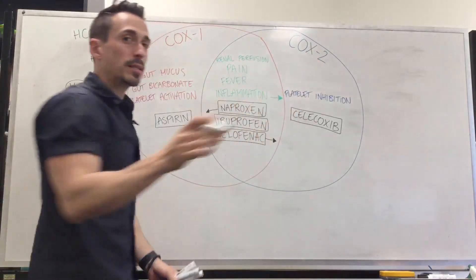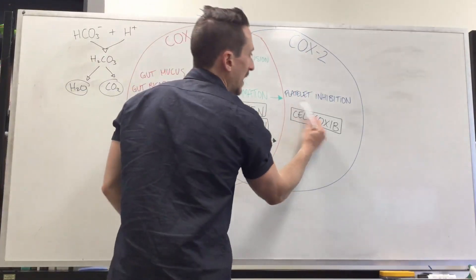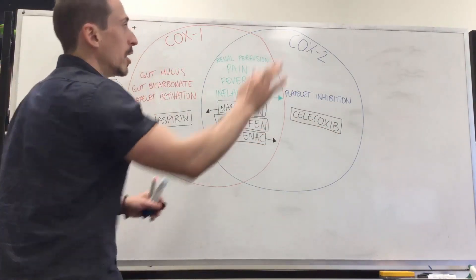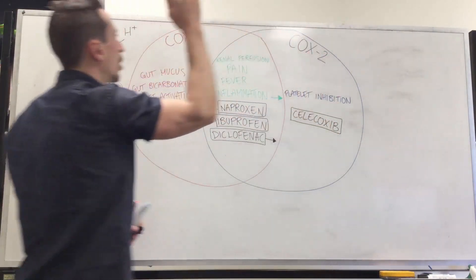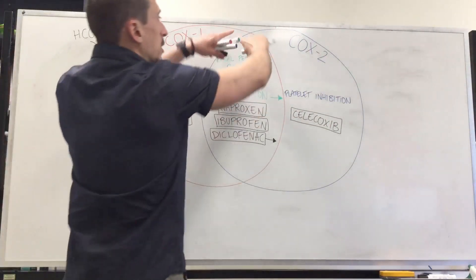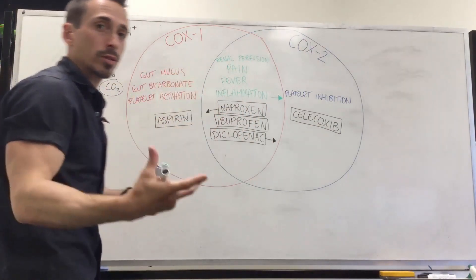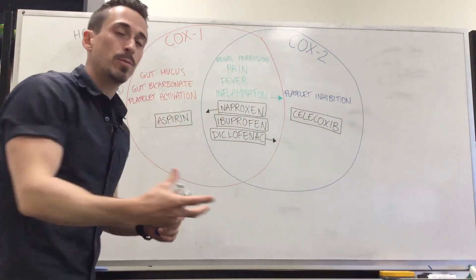Now COX-2 plays an important role when it comes to inhibiting platelets. So this stops clotting. COX-2 stops clotting, COX-1 activates clotting. Now there's a lot of overlap between COX-1 enzymes and COX-2 enzymes in regards to the prostaglandins they produce and their respective functions.